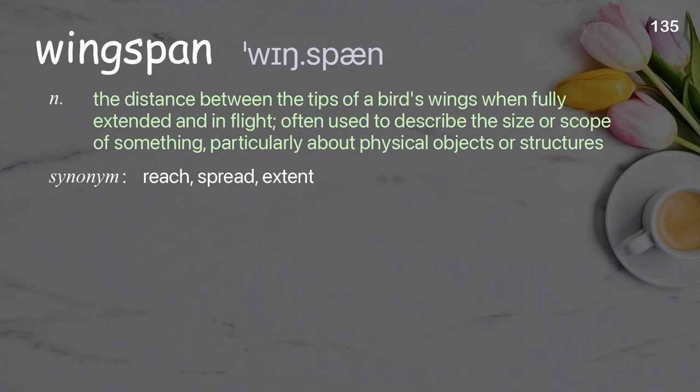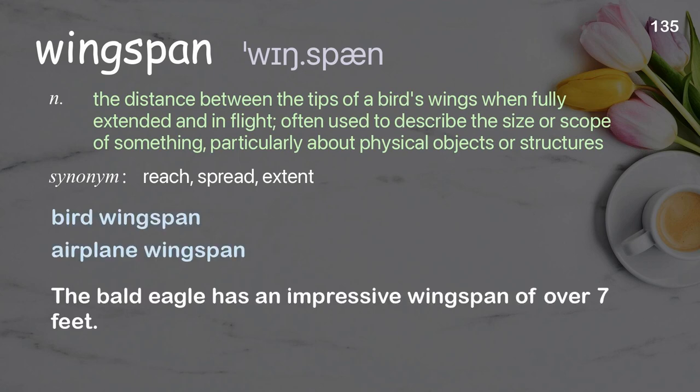Wingspan: the distance between the tips of a bird's wings when fully extended and in flight; often used to describe the size or scope of something, particularly physical objects or structures. Examples: bird wingspan, airplane wingspan. The bald eagle has an impressive wingspan of over 7 feet.